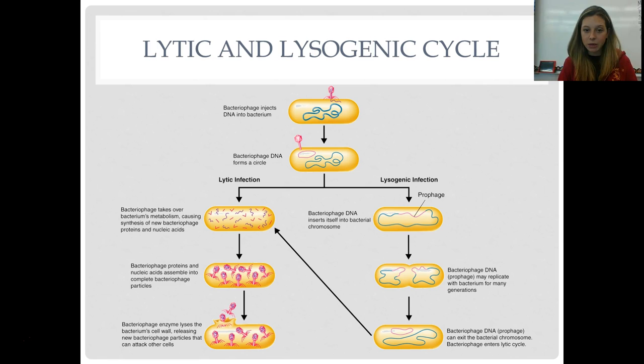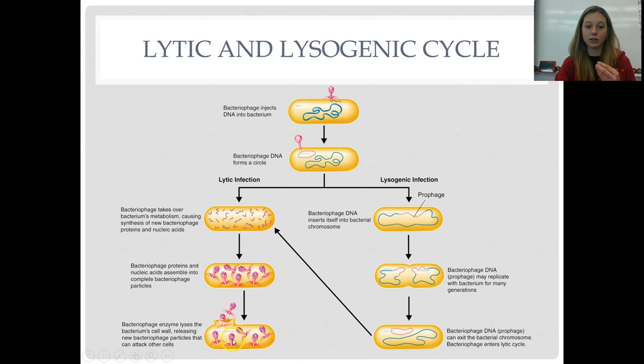Use the space on number 13 to draw and label what's happening in both cycles. In the lytic cycle, the virus attaches, injects DNA, and instructs your cell to make viruses; the cell fills with viruses and eventually bursts, releasing them to infect more cells. In the lysogenic cycle, the viral DNA incorporates into your cell's DNA; your cell grows and divides until those cells eventually activate and enter the lytic cycle — that's when you start feeling sick.